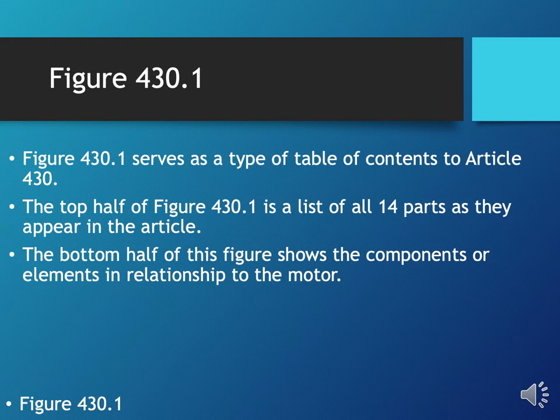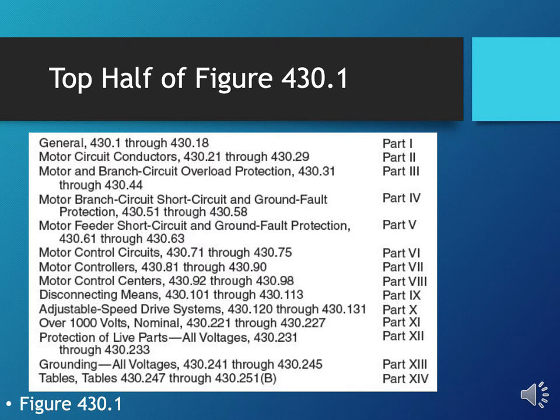If you have your code book, look at the very first part of Article 430 — Figure 430.1. This figure serves as a type of table of contents for all of Article 430. It can be thought of in two parts: the top half is a list of all 14 parts as they appear going through Article 430; the bottom half shows the components or elements in relationship to the motor. Looking at the top half of Figure 430.1, on the right side it numerically lists parts one through fourteen.